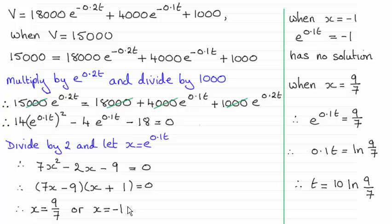Now we know then that when x is minus 1, we've got e^(0.1t) equals minus 1. And for an exponential graph like this, it can never be negative. So therefore there's no solution.